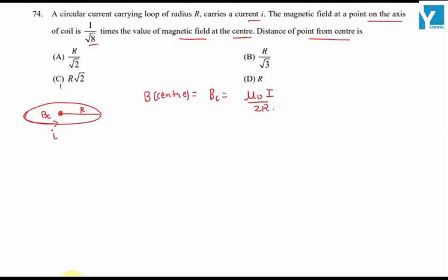Now magnetic field at a distance x from the center at a plane perpendicular to the plane is equal to 1 by root 8 times BC. This equals mu not upon 4 pi times 2 pi i R square divided by x square plus R square raised to power 3 by 2.